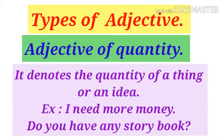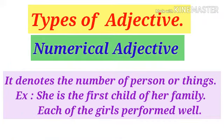Another example: 'Do you have any story books?' — here 'any' is the adjective of quantity because it describes a quantity of books, not a specific quantity, but it denotes some kind of quantity.